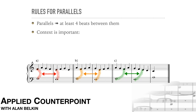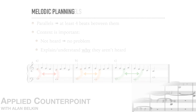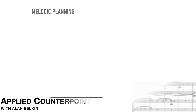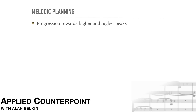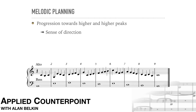More and more, we're going to have to pay attention to the context when parallels occur. When they really don't stand out, even with careful listening, they're acceptable, provided the student can explain why they're not very salient. Now let's get back to the question of planning the overall melodic design. We saw in second species how a progression towards higher and higher peak notes in the line can create a sense of direction. This principle is even more useful in third species to avoid aimless wandering.